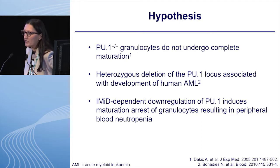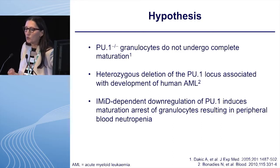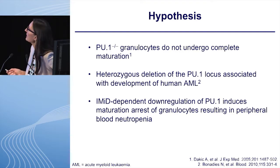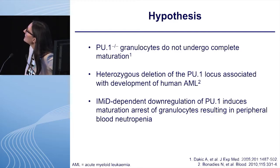Having those studies, we went back to the literature. We found that PU.1 knockout granulocytes do not undergo complete maturation, and that heterozygous deletion of PU.1 is associated with development of AML. So we hypothesized that an IMID-dependent downregulation of PU.1 induces a maturation arrest of the granulocytes, resulting in peripheral blood neutropenia.